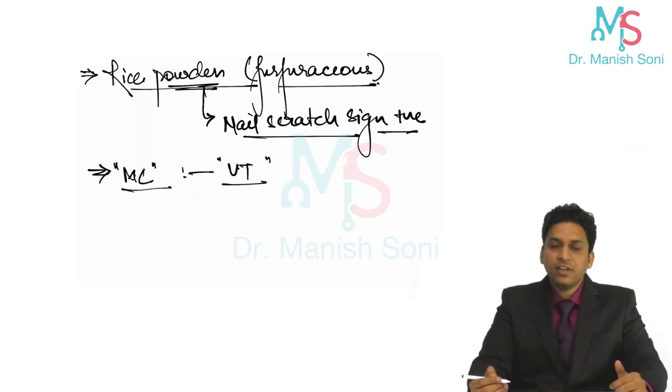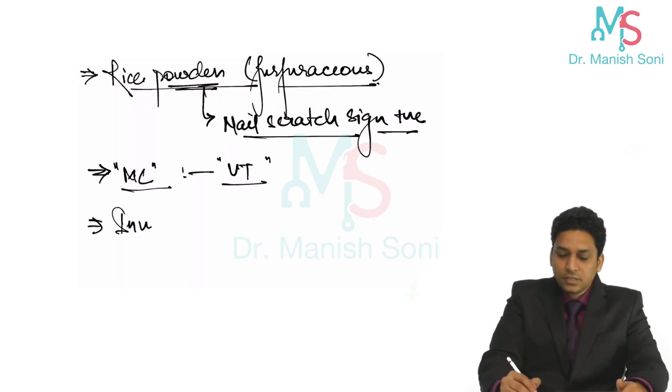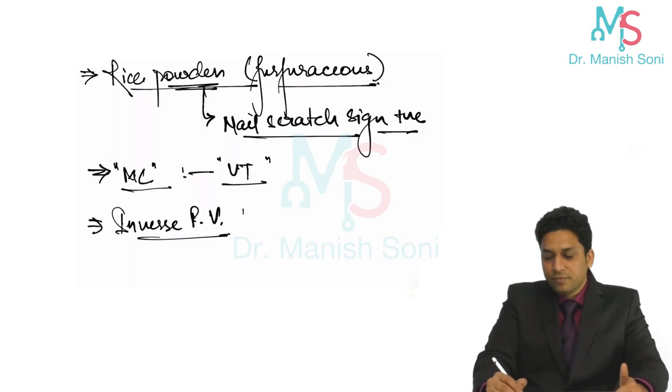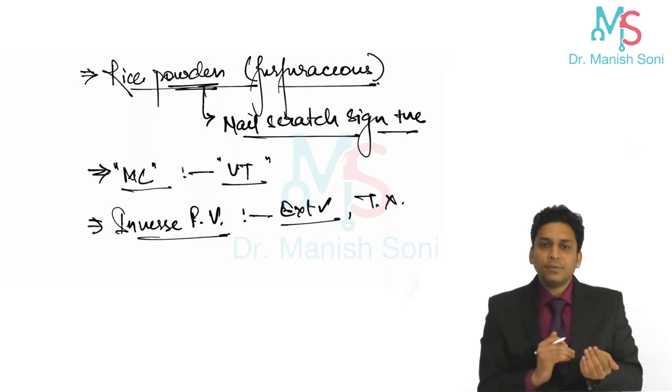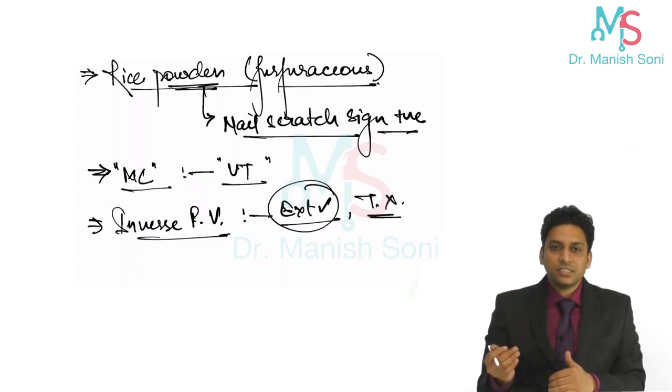There is one condition known as inverse pityriasis versicolor. When we call it inverse pityriasis versicolor, if extremities are involved and the trunk is spared. If opposite happens, if extremities are involved and trunk is spared, we call it inverse pityriasis versicolor.